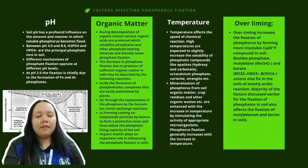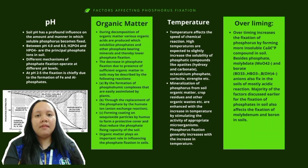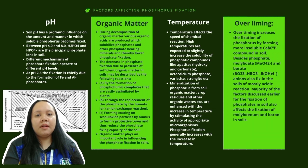The decrease in phosphate fixation due to the presence of sufficient organic matter in soil may be described by the following reactions: A) by the formation of phospho-humic complexes that are easily assimilated by plants; B) through the replacement of phosphate by humic ions in ion exchange reactions; C) by humus forming a coating on sesquioxide particles as a protective cover.